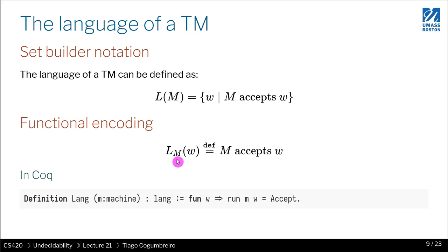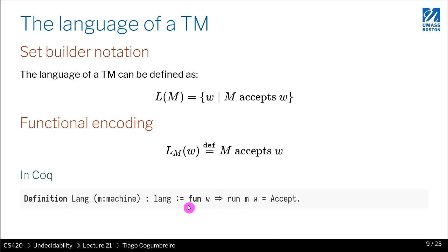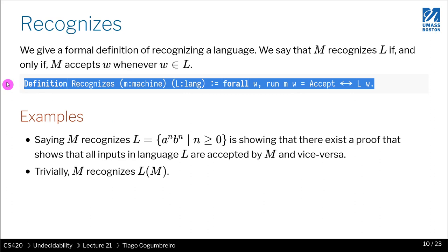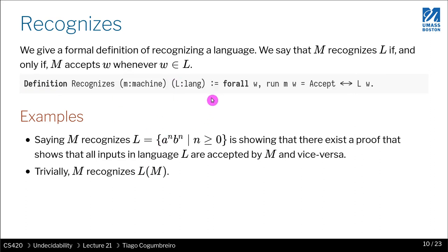Saying that something is the language of a Turing machine — well, the language of a Turing machine is all the inputs that are accepted by that machine. A very easy way to define acceptance of a Turing machine is just to write this predicate: a word is recognized by a certain machine if, by running it, you get 'accept'. A machine recognizes the language if, for all inputs, it will accept that input if and only if the word is in the language. This is the notion of recognizing a language — in the book, we just say that L equals L(M). So all of this is pretty trivial.